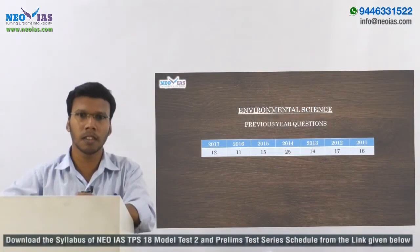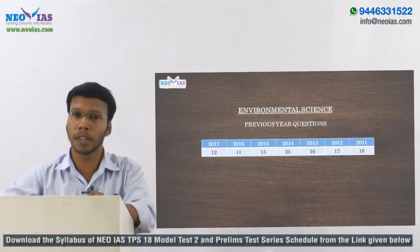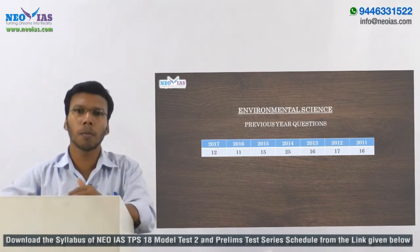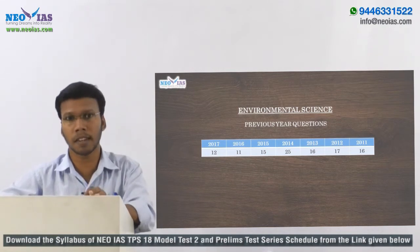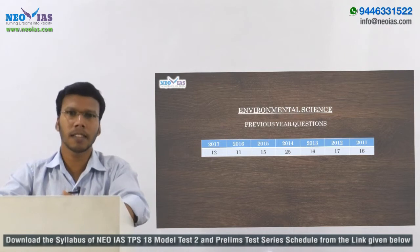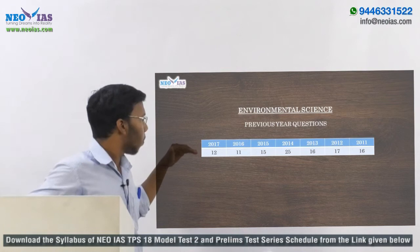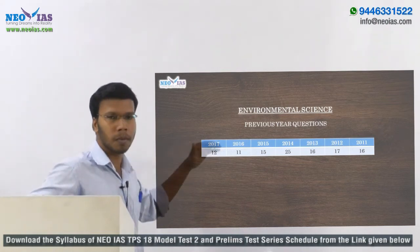In this video, I'm going to discuss the main topics you need to cover for your PMT 2 and also for your clinical examination. Our model test 2 will have 50 questions — 45 from environmental science and 5 map questions. Environmental science is an important subject for the preliminary examination, where we can expect around 11 to 25 questions.